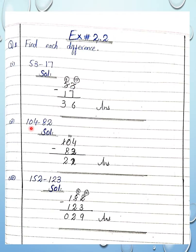Question 2 is 104 minus 82. Here we have 3 digits minus 2 digits. 4 is greater than 2, so 4 minus 2 is 2. Now in the tens place we have 0, and we need to subtract 8. Since 0 is less than 8, we borrow 1 from the hundreds place. So 10 minus 8 gives us 2, making the tens digit 2.